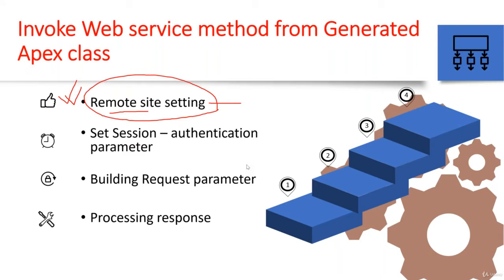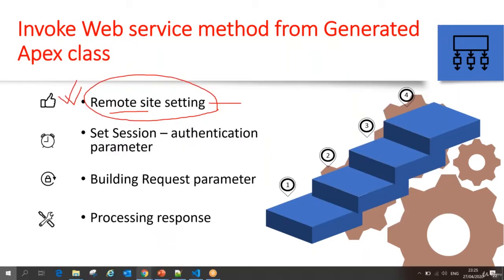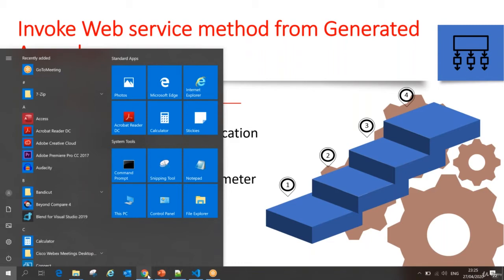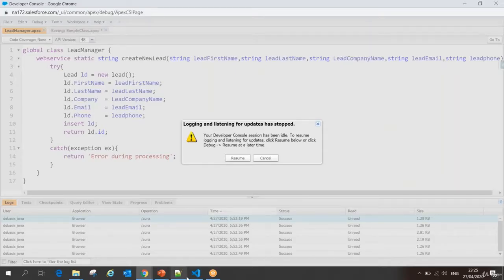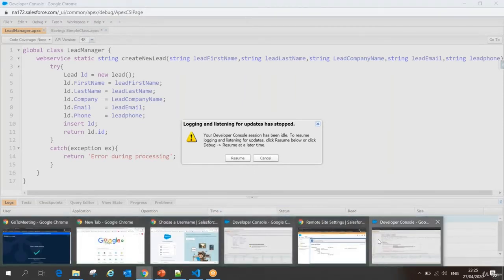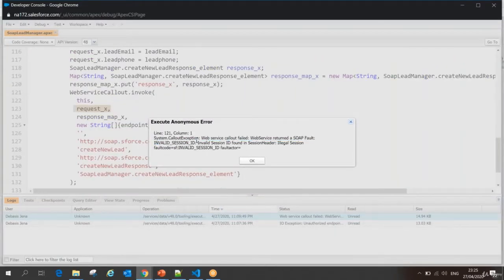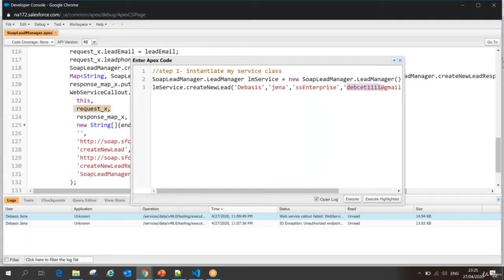In the previous session we understood that whenever you want to make a web service call to any remote site or remote server, you simply have to add a remote site setting first. When I was doing this integration I got some kind of error specifying an invalid session ID. So now let me show that part — I was getting an invalid session ID.